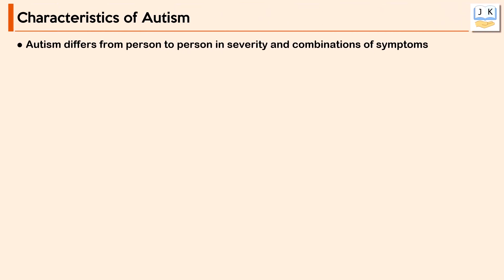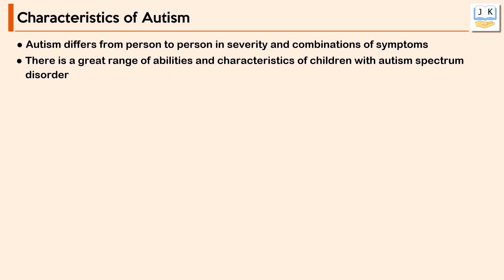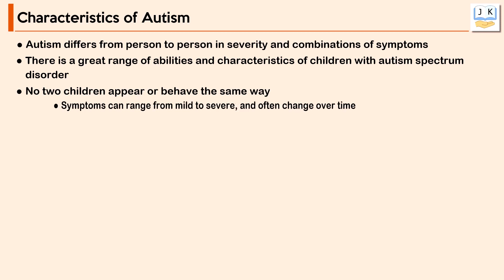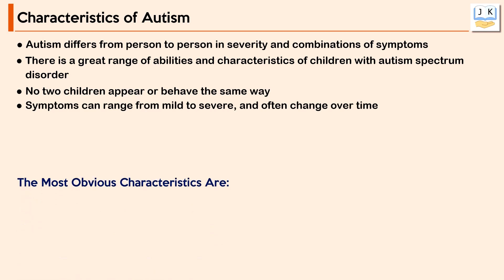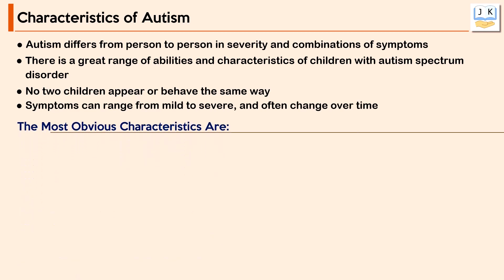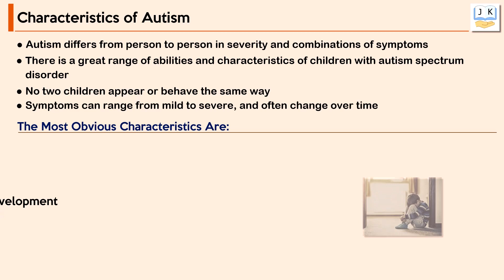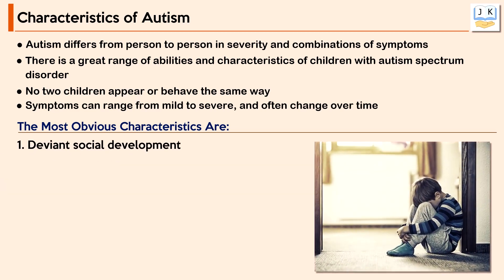Autism differs from person to person in severity and combinations of symptoms. There is a great range of abilities and characteristics among children with autism spectrum disorder — no two children appear or behave the same way. Symptoms can range from mild to severe and often change over time.